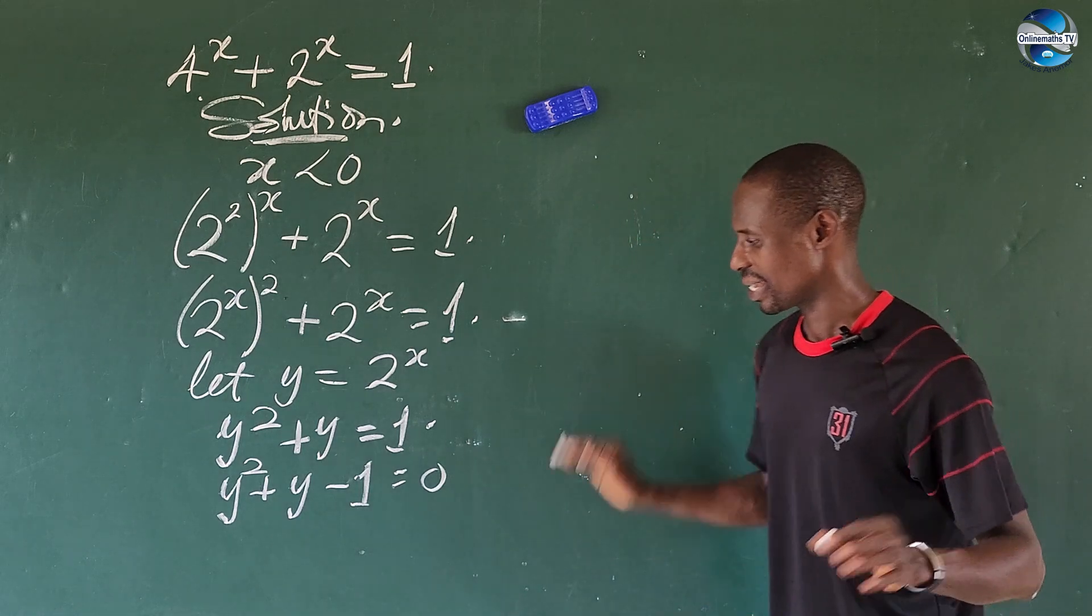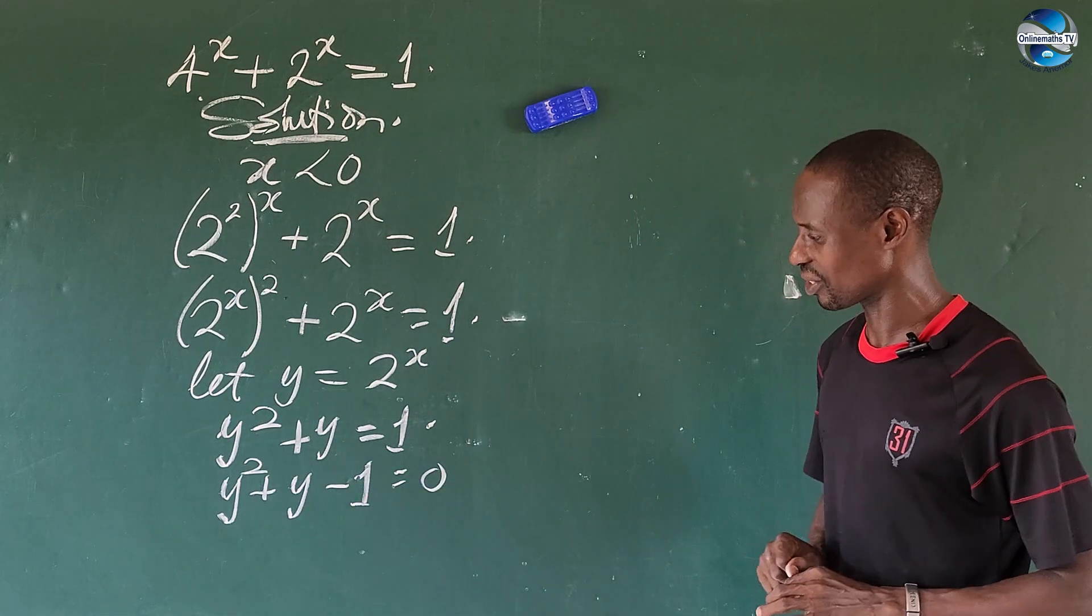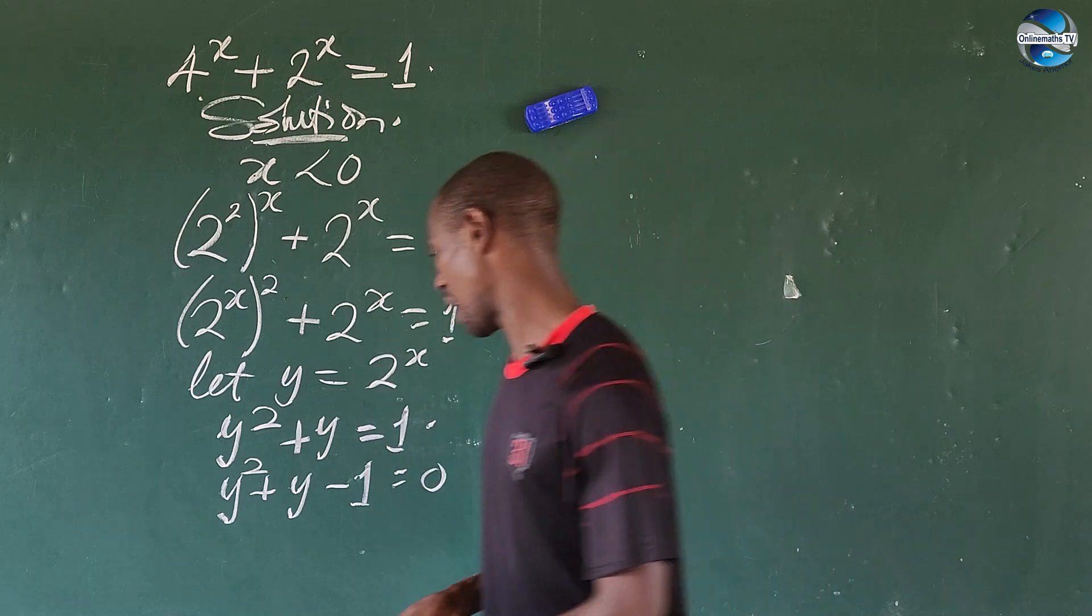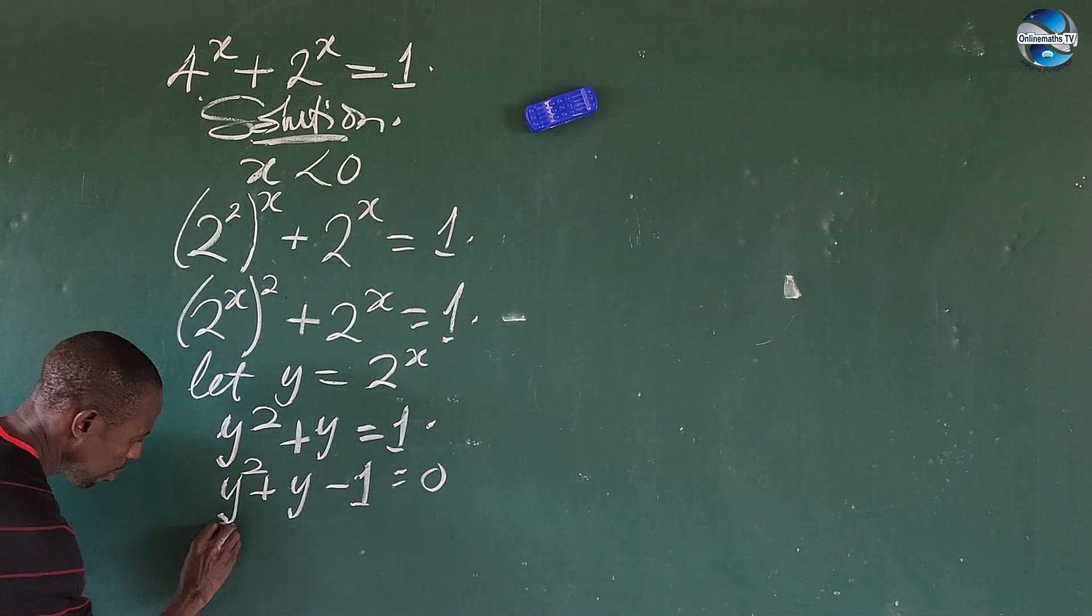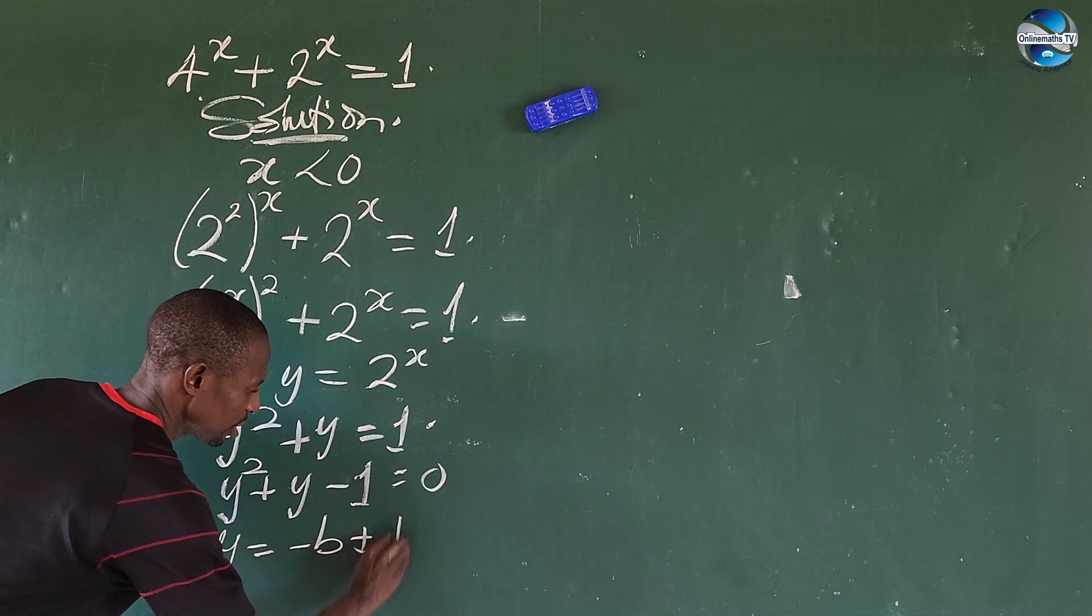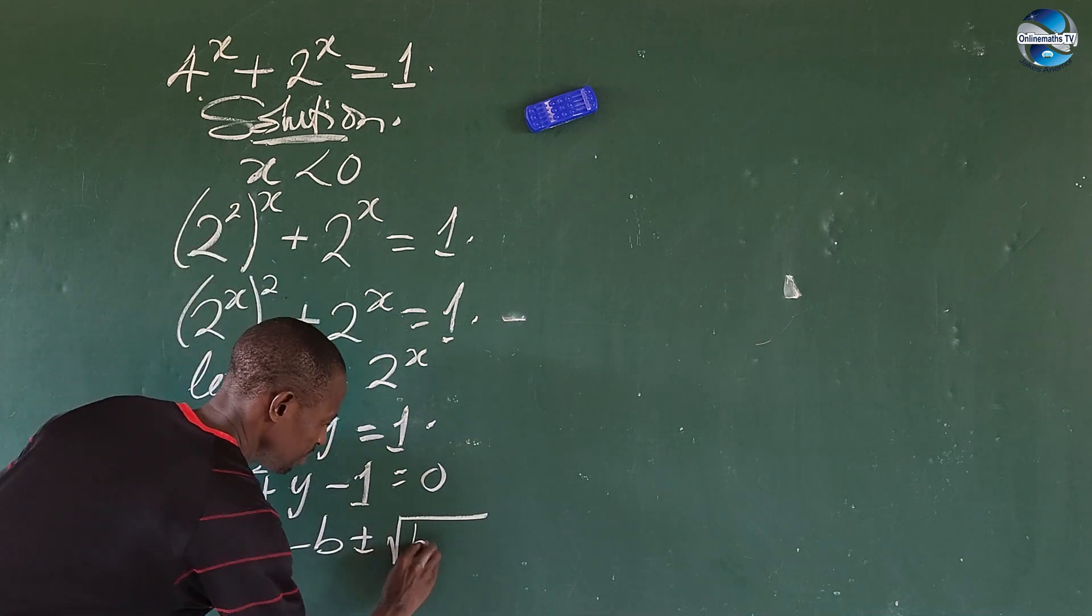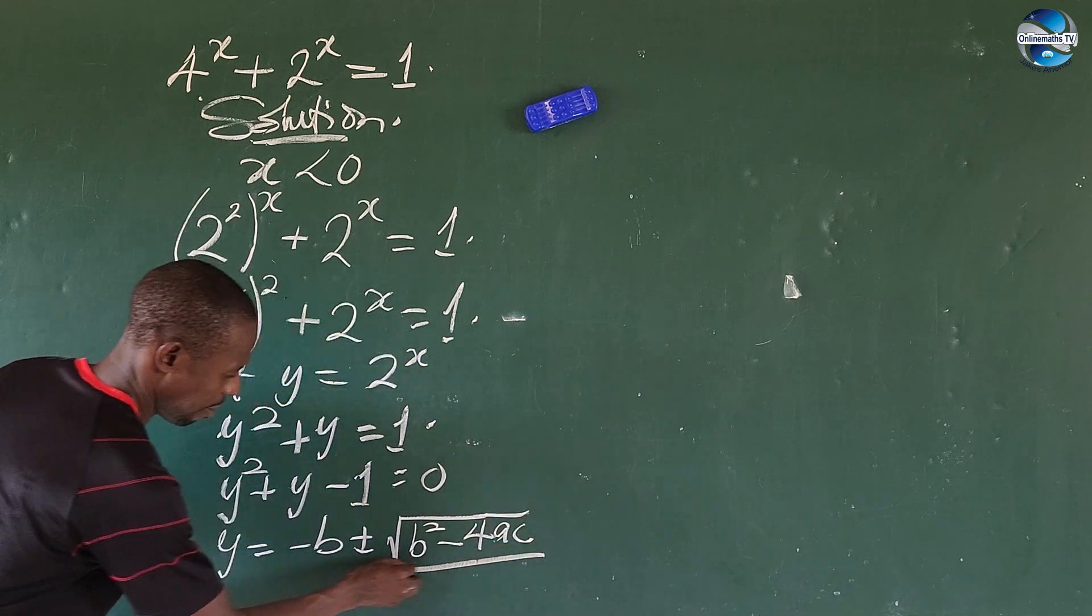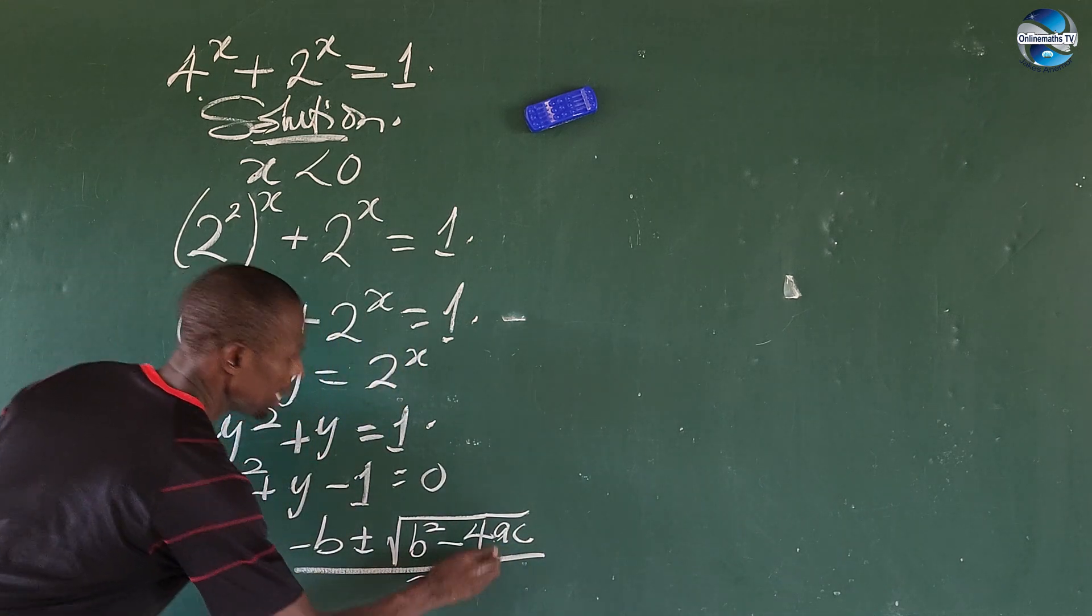This is a quadratic equation. We solve the quadratic equation and we cannot use the factorization method, so we use the formula method. The formula says that y will be equal to minus b plus minus the square root of b squared minus 4ac all over 2a.